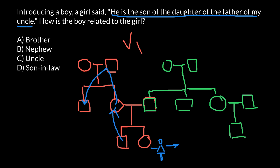Let's check. She is saying he is the son of the daughter of the father of my uncle. This is going to be her uncle. He is the son of the daughter of the father of my uncle.